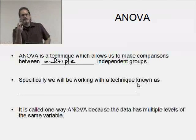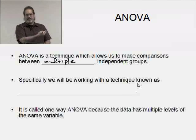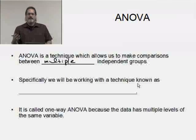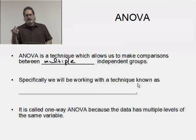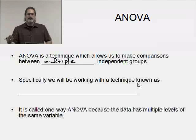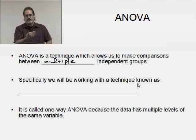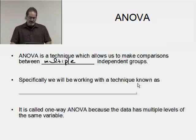ANOVA is a technique which will allow us to make comparisons between multiple independent groups. By the way, if you're doing ANOVA on only two groups, don't. Just do a two-sample t-test. But if you do end up with ANOVA on two groups for whatever reason, you get the identical result as you would with a two-sample t.